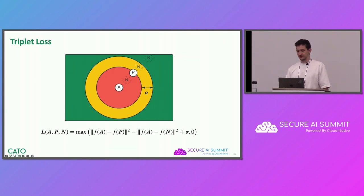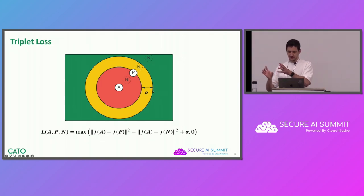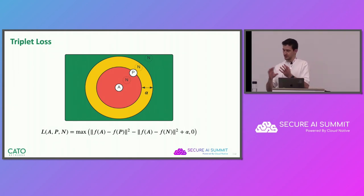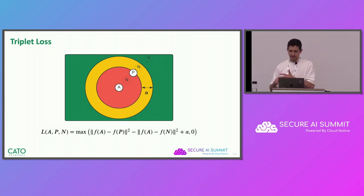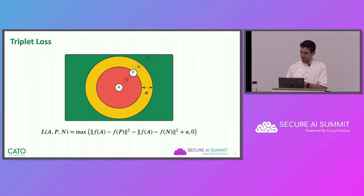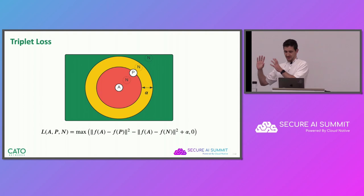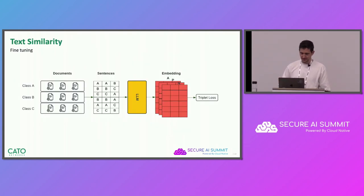There's also the notion of margin. The margin helps us control the training phase of the network. Even if N is further away from A in comparison to P, we still might want to create a positive loss value because the embedding is still close by, and we want N to be far away and next to sentences that have the same meaning as it does.